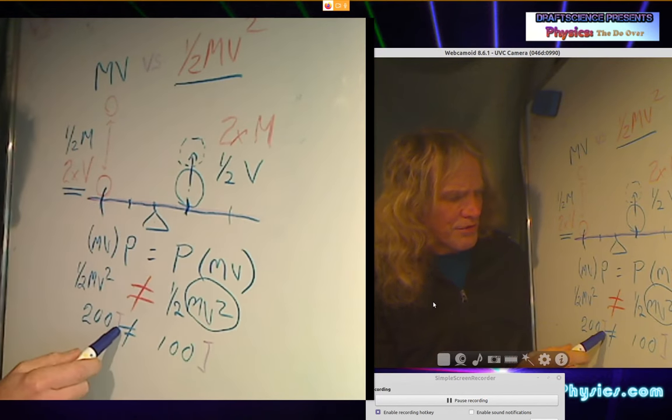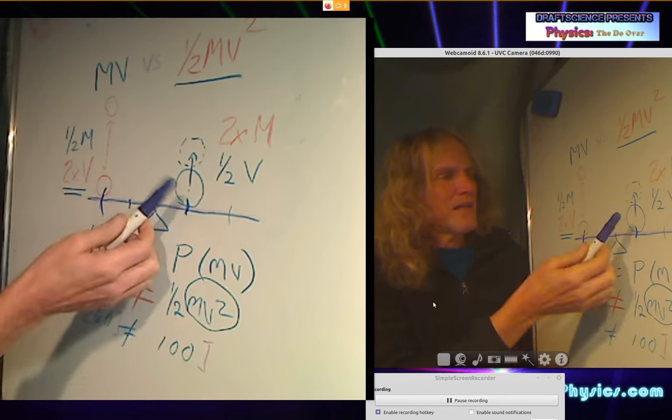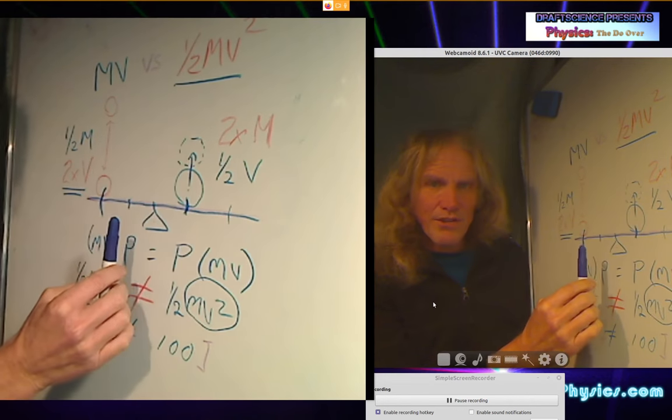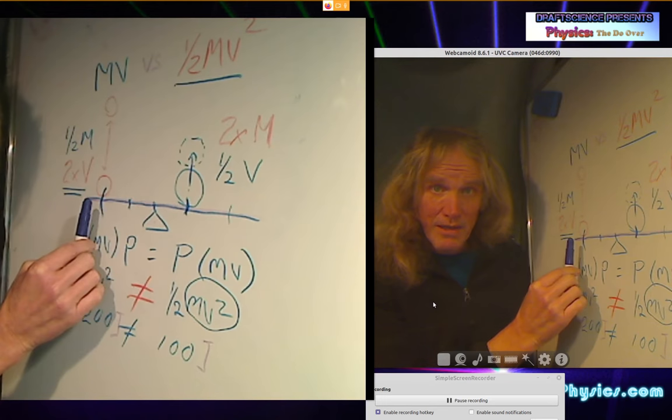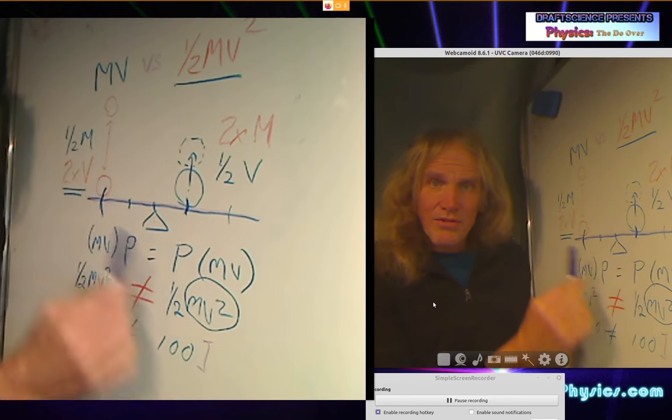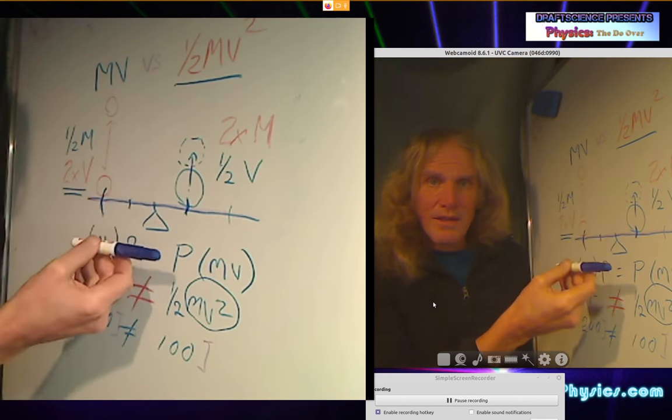Clearly 200 joules does not equal 100 joules. You cannot have 100 joules of energy on one side of the balance and 200 joules of energy on the other side of the balance and say you have a rational balance. Say you have a system that will oscillate.